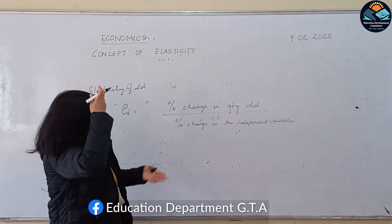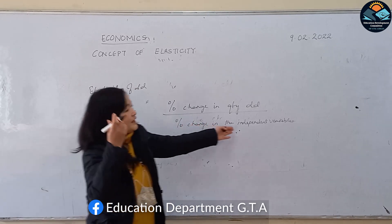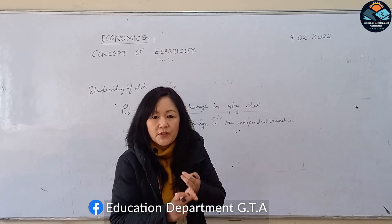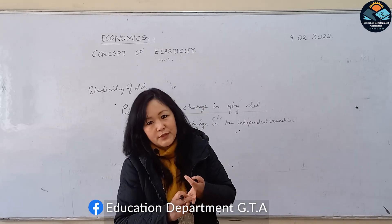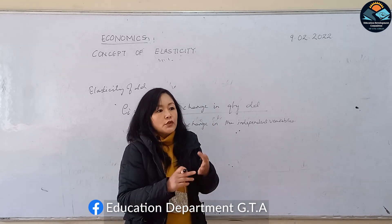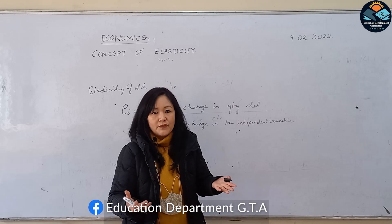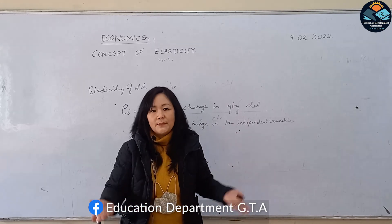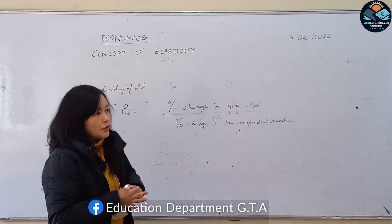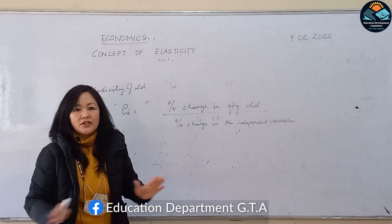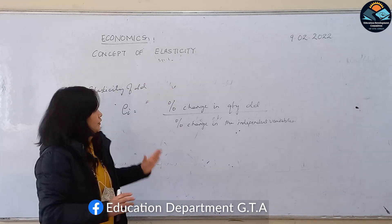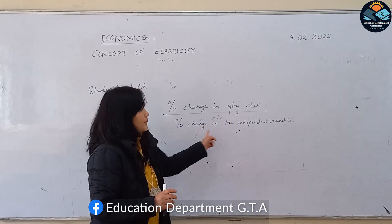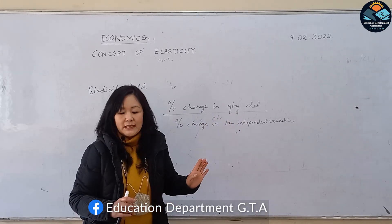Elasticity of demand is the percentage change in quantity demanded due to the percentage change in the independent variable — any one of the independent variables — all other variables remaining constant. Since the independent variables could be price, income of the consumer, or price of related commodities, there will be different elasticities of demand depending upon which independent variable we choose.